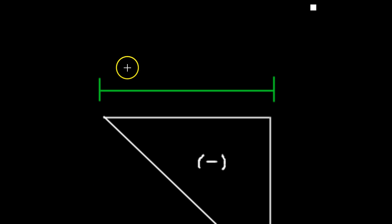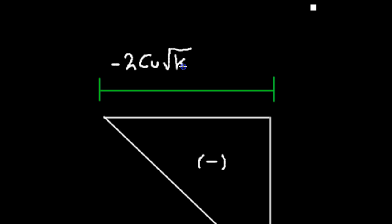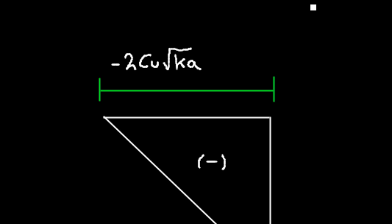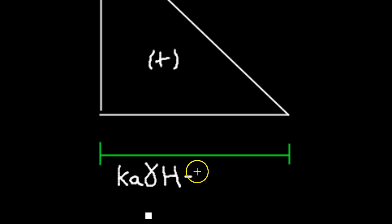Labelling the pressure diagram: the maximum negative pressure at the top is calculated as minus two times Cu (the undrained cohesion value) times the square root of Ka (the coefficient of active lateral earth pressure). At the bottom of the pressure diagram, the pressure is calculated as Ka times the unit weight of the soil times H (the excavation depth), minus two times Cu times the square root of Ka.